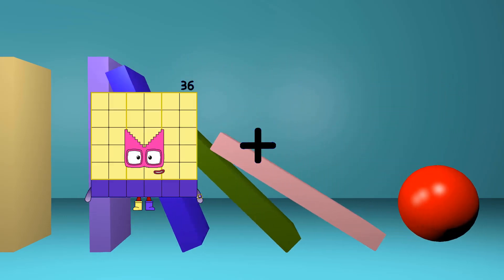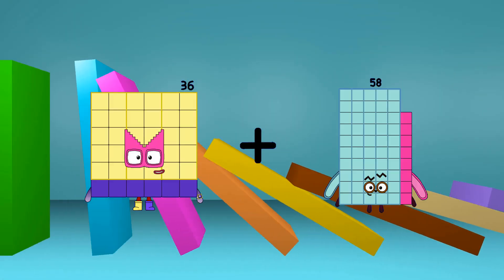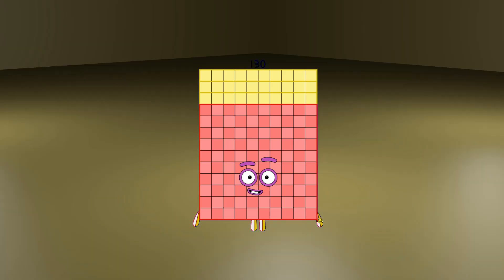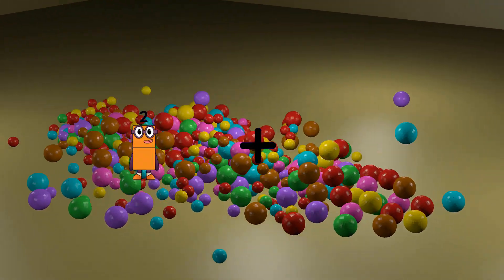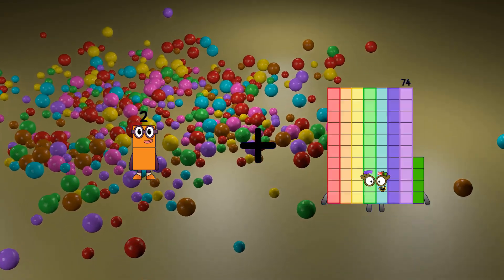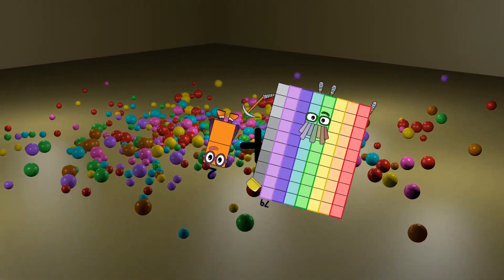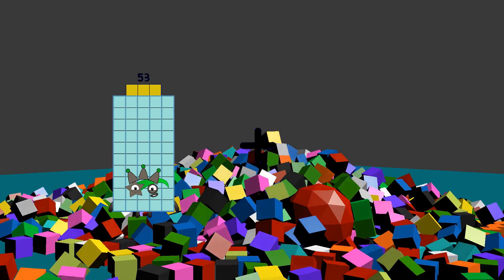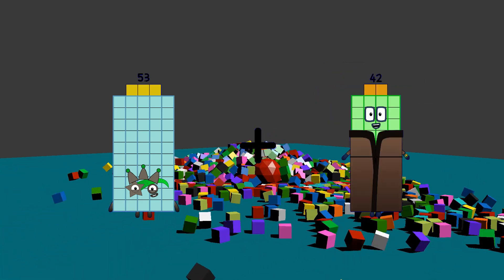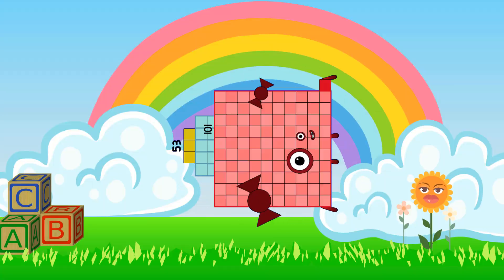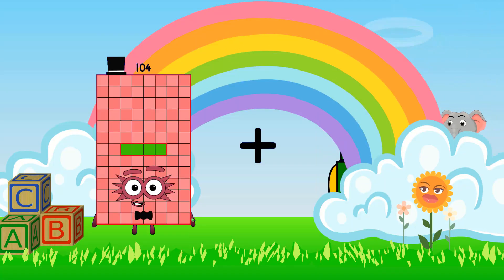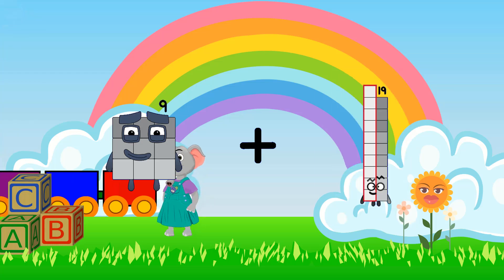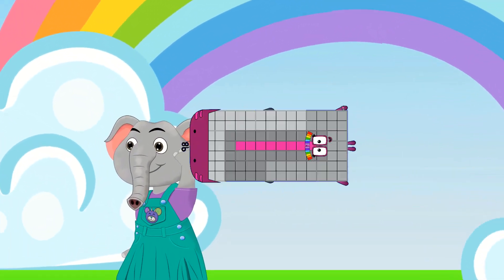36 plus 94 equals 130, 2 plus 79 equals 81, 53 plus 101 equals 154, 9 plus 98 equals 107.